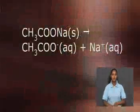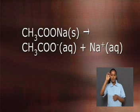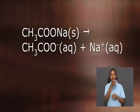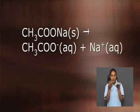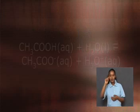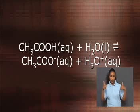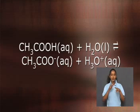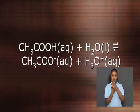If sodium acetate and acetic acid are dissolved in the same solution, they both dissociate and ionize to give acetate ions. Sodium acetate is a strong electrolyte, thus it dissociates completely when it is put into solution. Acetic acid, on the other hand, is a weak acid. It only ionizes partially.